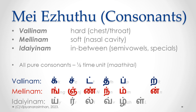These consonants are classified as hard and soft based on the place where they are articulated — where the articulation happens when you say that letter. In modern linguistics, the hard consonants are called stops or plosives. The soft ones are nasal consonants, where the articulation happens in the nasal cavity.